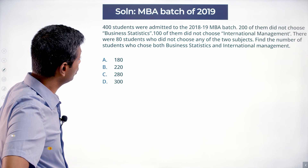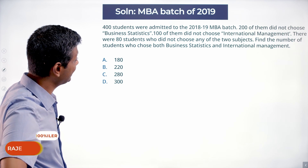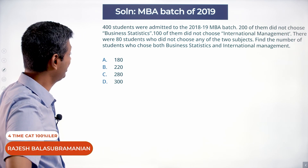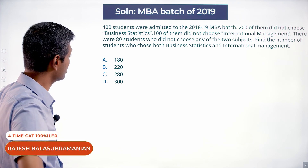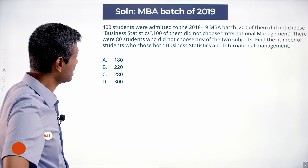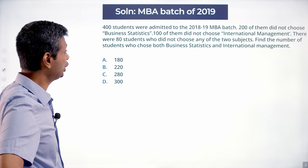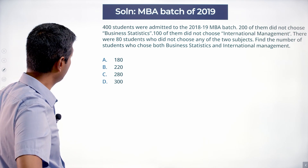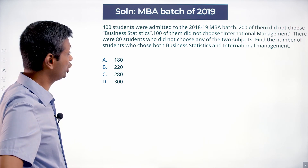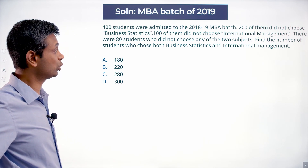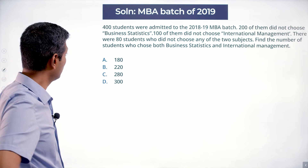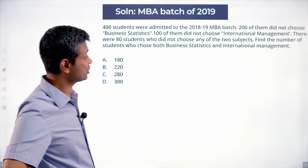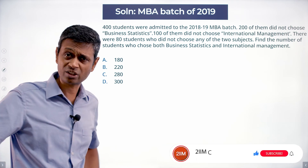400 students were admitted to the 2018-19 MBA batch. 200 of them did not choose business statistics. 100 of them did not choose international management. There were 80 students who did not choose any of the two subjects. Find the number of students who chose both business statistics and international management.